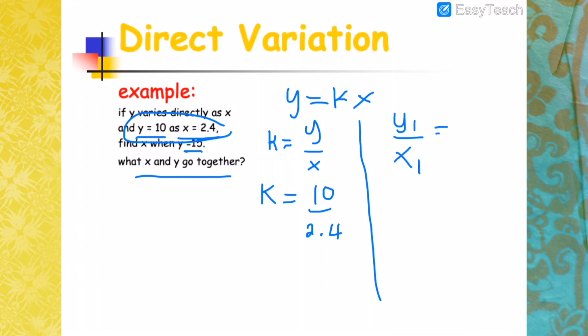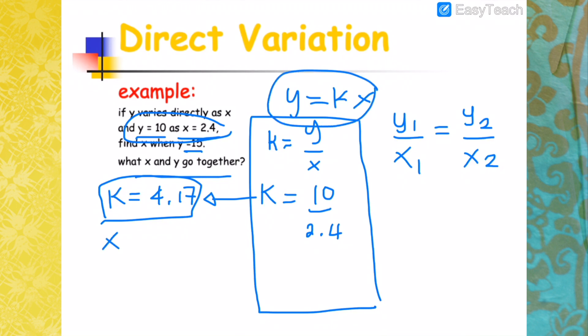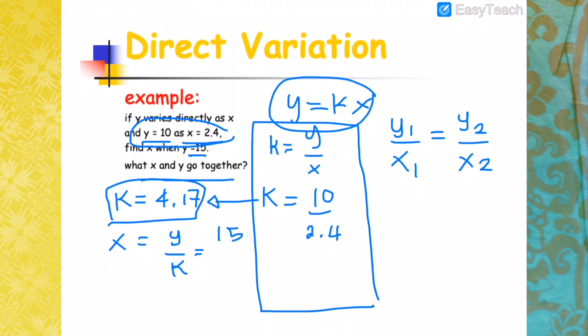Now the other way of solving this is you will have Y1 over X1 equals Y2 over X2. So if you do the first way, you will get the value of K by dividing 10 by 2.4. So that means our K here is 4.17. Now using this K, you find X using the original formula, X equals Y over K. Substitute when Y is 15, K is 4.17. Therefore, X would be 15 divided by 4.17. That will give you 3.60.